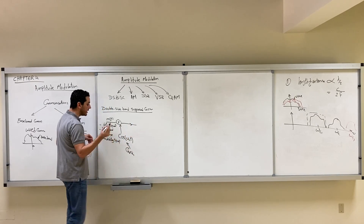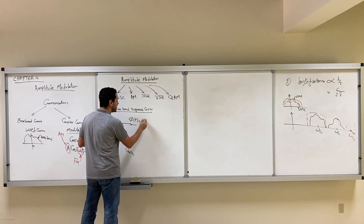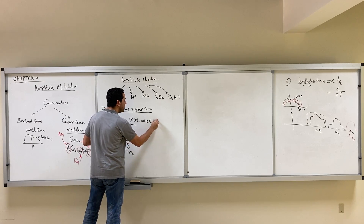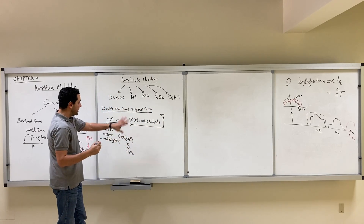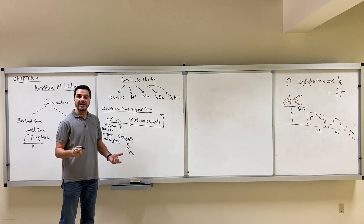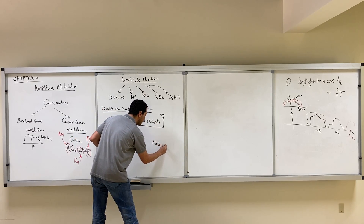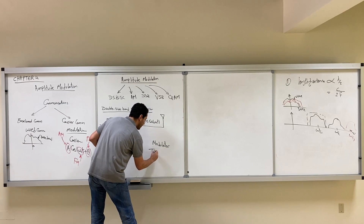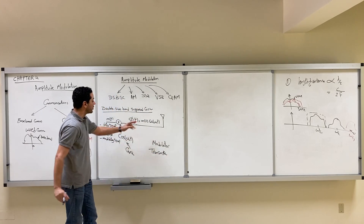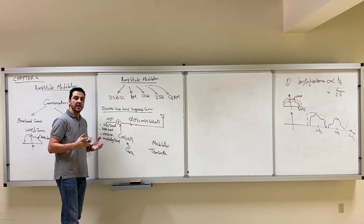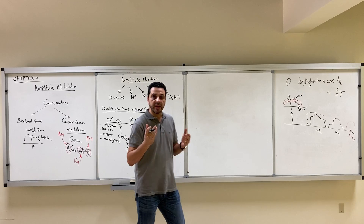After multiplying these two signals, we get a signal φ(t) = m(t) · cos(ω_c · t), and this is the signal that we are going to transmit. This structure is called the modulator or the transmitter. So the transmitted signal is m(t) · cos(ω_c · t).